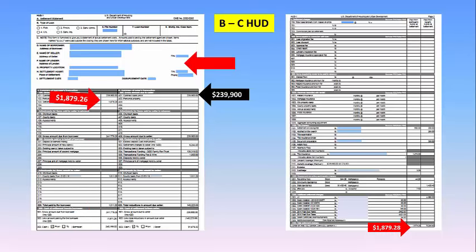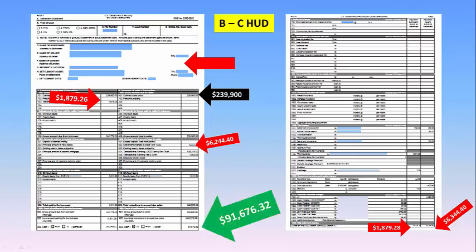Here are the expenses on the B to C side: $1,879.26 for the buyer's side. The student is now the seller. He paid $6,244 on the seller's side. If you're asking where's the commission — there is none. This is the bottom line of the B to C HUD. That's the net profit on the transaction. I'm going to show you on the next page the transactional funding amount and how it came out.